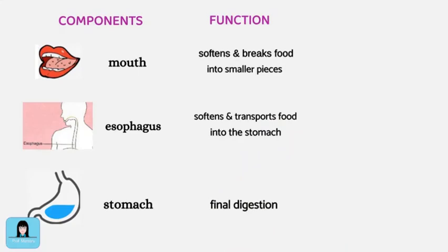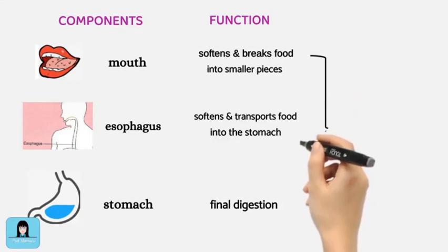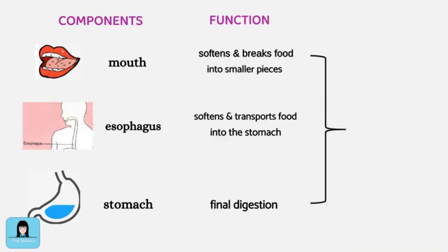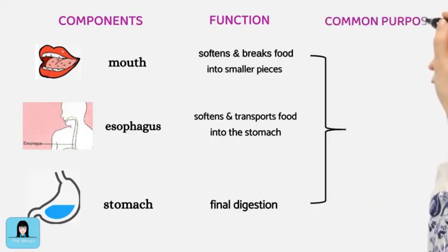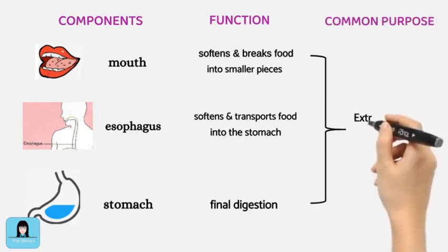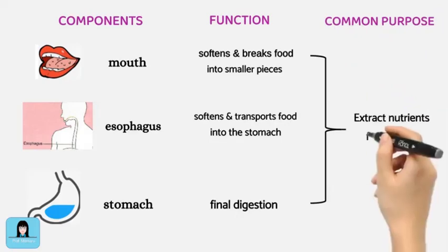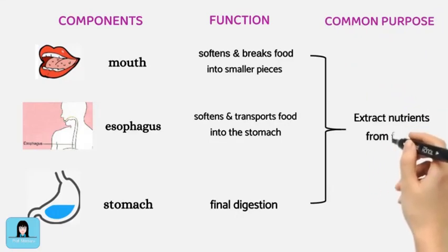Each component is related to another component. The failure of one component will be the failure of the entire system. The common objective of the digestive system, through its interrelated components, is to extract nutrients from the food.